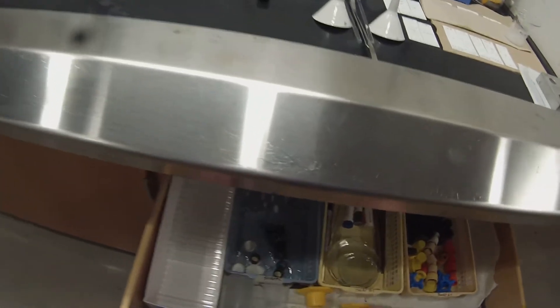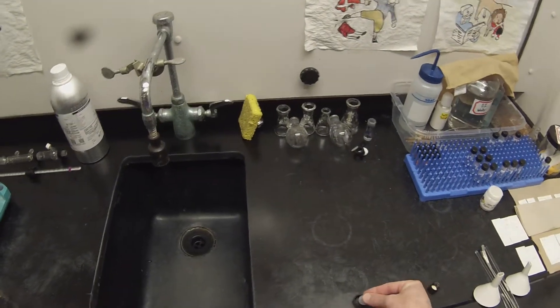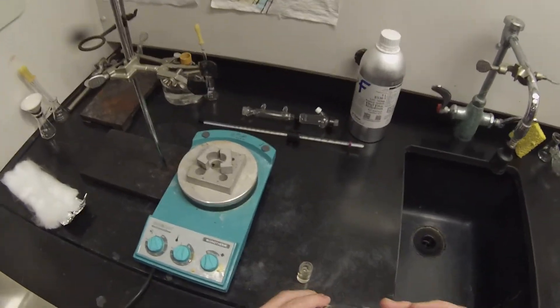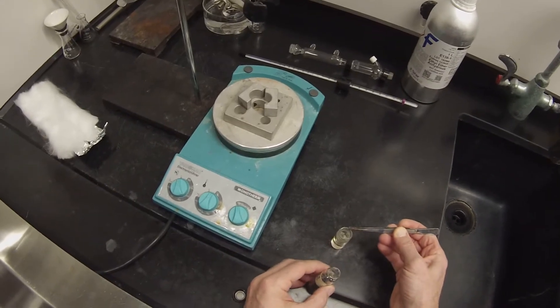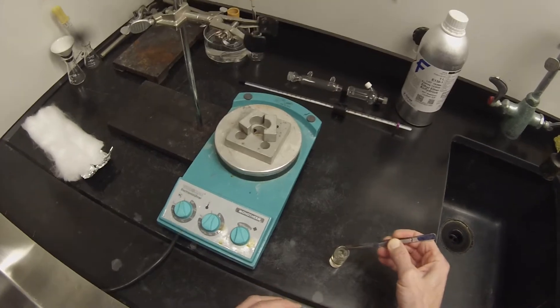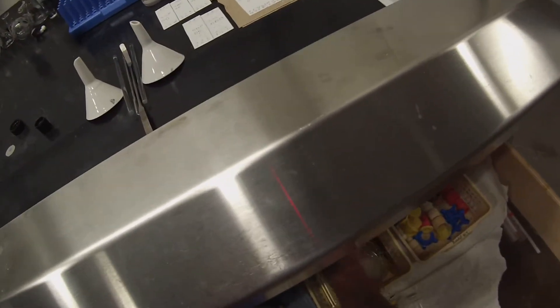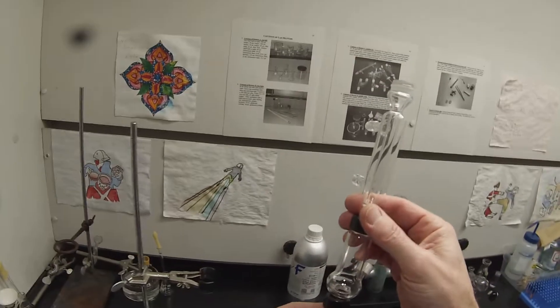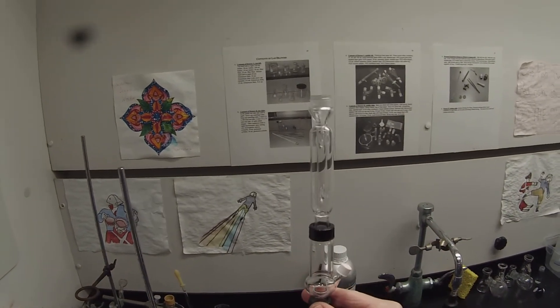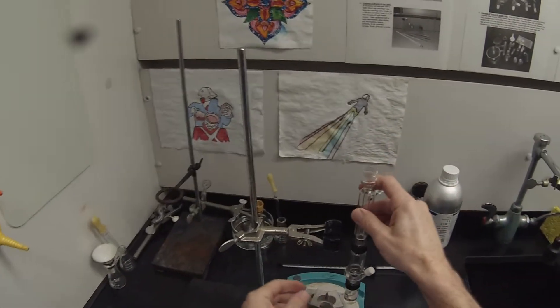That should be warmed up enough, close to room temperature, that I can put some boiling stones in there without introducing moisture. We'll take the cap off. Nice fruity smelling ester. I'm going to add two boiling stones, and then we will attach this to our assembly.